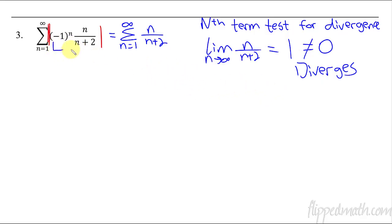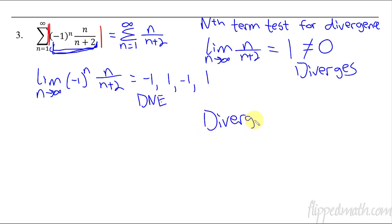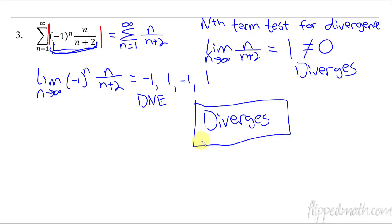Now for the original series without the absolute value — it's very similar. Using the nth term test again: as n approaches infinity, the n over n plus two part approaches one, but it's being multiplied by the alternating part, which switches between negative one and positive one. So the limit doesn't exist — it alternates between negative one and one. Since the limit doesn't exist, the original also diverges. Both diverge, so the whole thing is just diverging — no conditional or absolute convergence, just diverges.